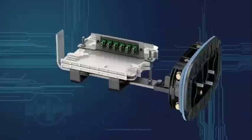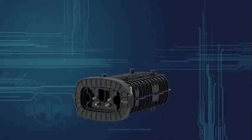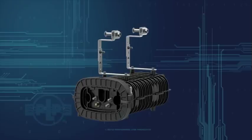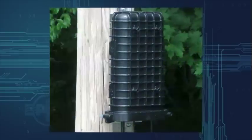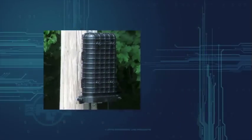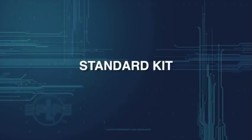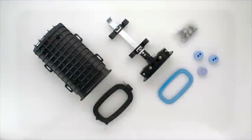Mounting options include an offset aerial hanger bracket with adjustment capabilities for strand mount applications or ADSS mount applications. Mounting hardware is also available for pole or wall mount and below grade applications.